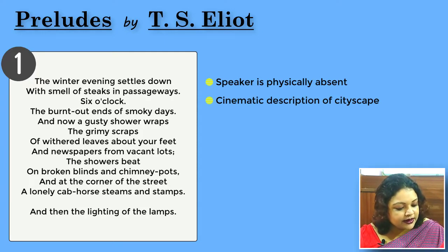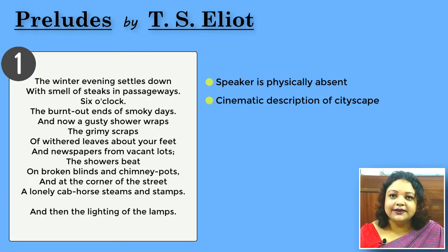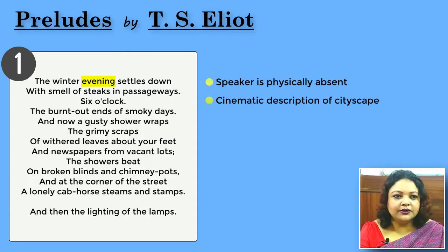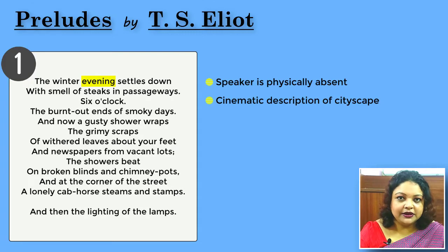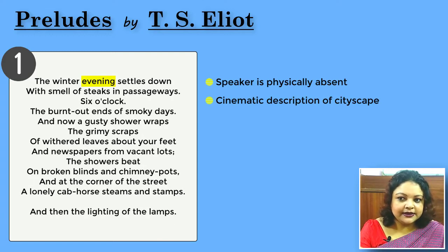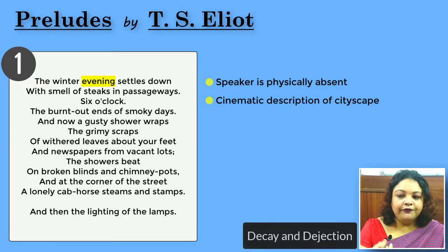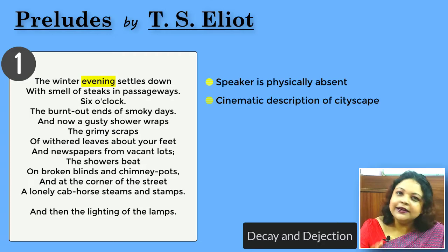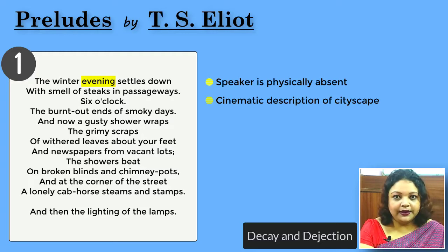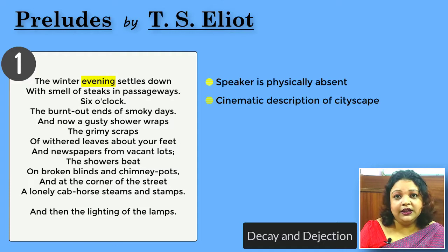Evening is a very favorite setting for Eliot. In Prufrock we also see evening as the starting point — the evening lays out itself like a patient etherized on a table. Therefore this evening, which carries in it the elements of decay, of something dying off like autumn, is different from the evening or the autumn which we see in the works of Romantic poets.